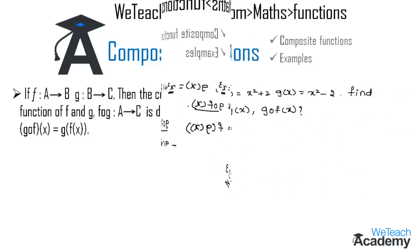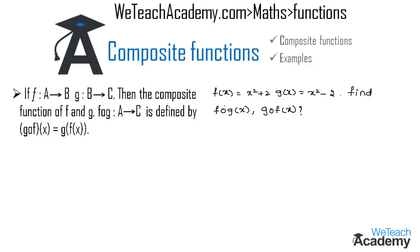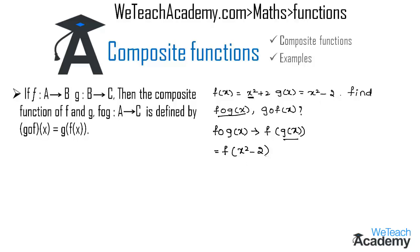Now for another example, we have f of x equal x square plus 2 and g of x equal x square minus 2. We need to find f circle g of x and g circle f of x. f circle g of x is defined by f of g of x, where g of x is x square minus 2. Replacing x with x square minus 2, we get x square minus 2, whole square plus 2.